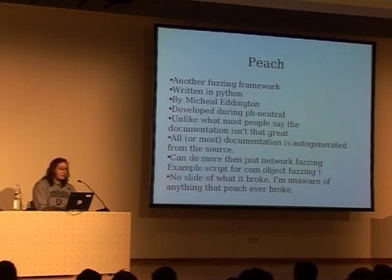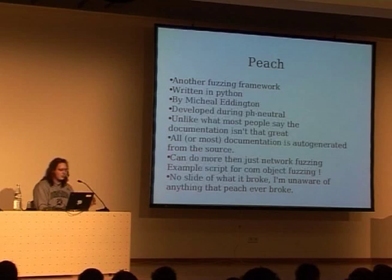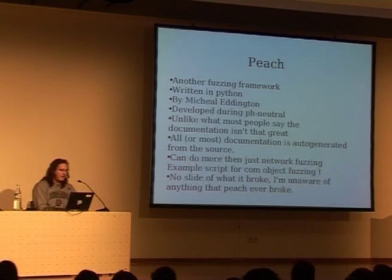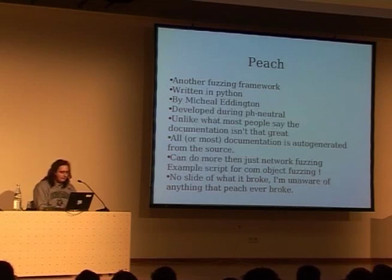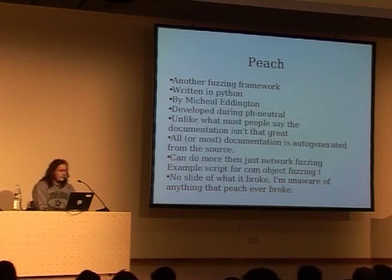Besides that, Peach is a wonderful fuzzing framework. The difference between Peach and the others is that it does a lot more than just network fuzzing — it can fuzz APIs, files, COM objects, pretty much anything. Recently Michael Eddington released Peach.NET and Peach.C, which you can use to fuzz .NET stuff and anything written in C APIs. I don't have a slide of stuff it broke, because apparently people aren't keen on telling the world what they found with Peach. But it's a cool framework — you should definitely check it out.